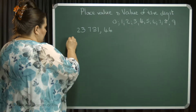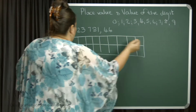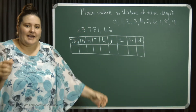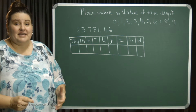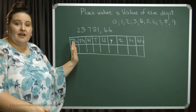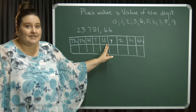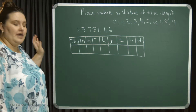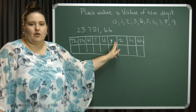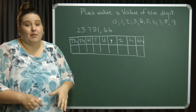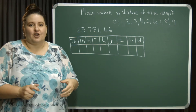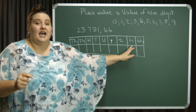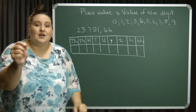A place value diagram is a diagram where we have columns consisting of units, tens, hundreds, thousands, ten thousands, and so forth. And on the right-hand side of the comma, we have our tenths, hundredths, and thousandths. The column for the comma might look a bit big — please do not let that confuse you.